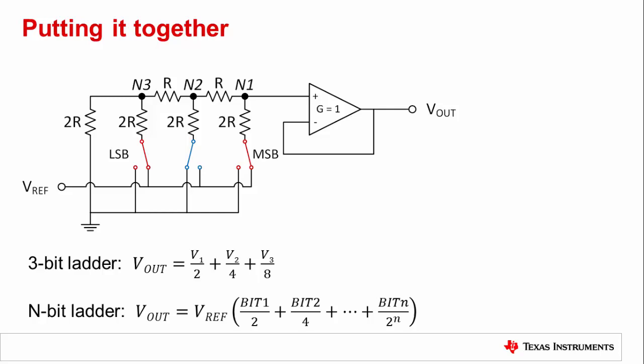Now you begin to see the pattern develop. By superposition, the arm at the MSB contributes a voltage of V1 over 2, the next arm contributes V2 over 4, and the final arm contributes V3 over 8. In an R2R ladder, when a bit of the code is set to 1, the corresponding switch in the ladder provides the reference voltage at that arm. Conversely, for a bit set to 0, the ladder is connected to ground. We can then develop an equation for the ladder based on the reference voltage and the individual bits in the DAC code. If you extend this out to n number of arms in the resistor ladder, you get this equation.